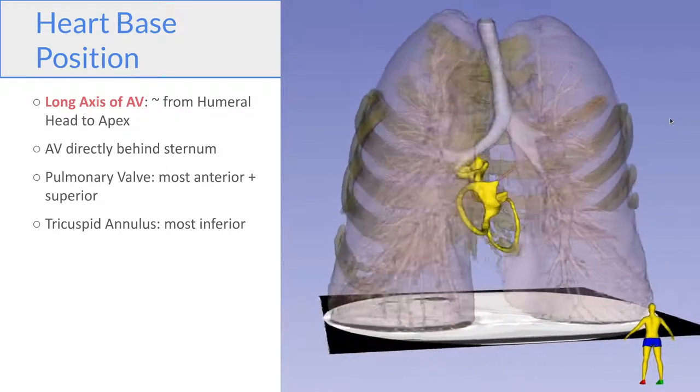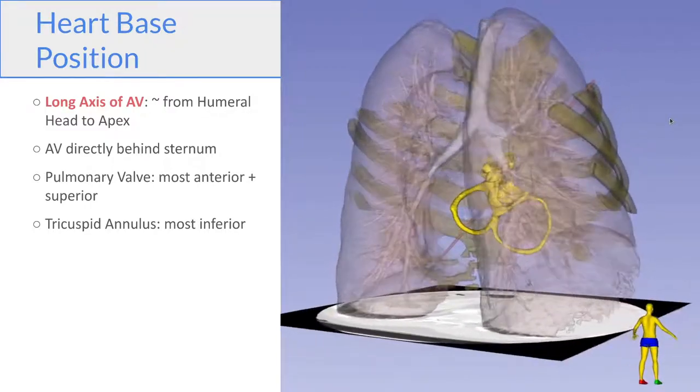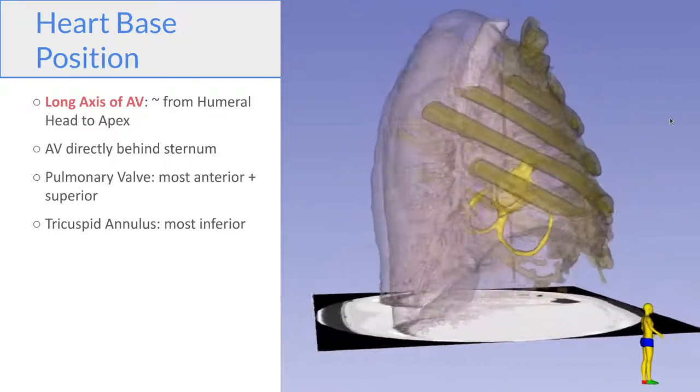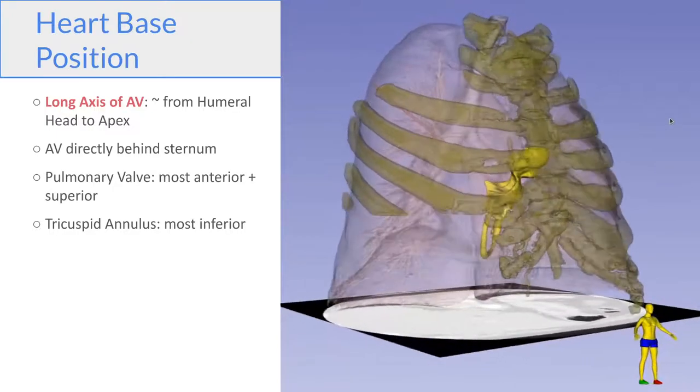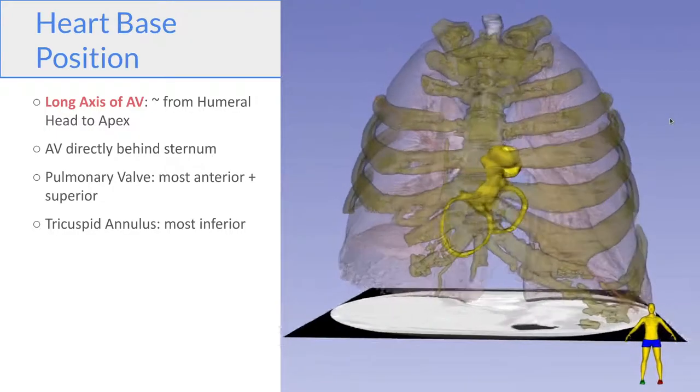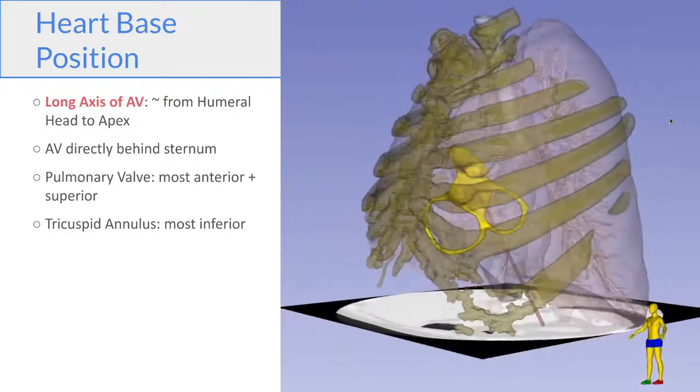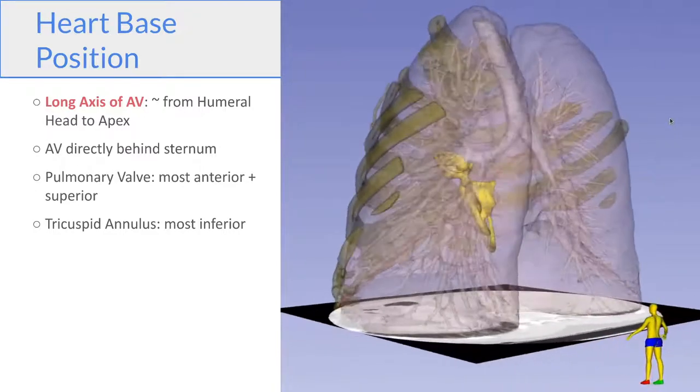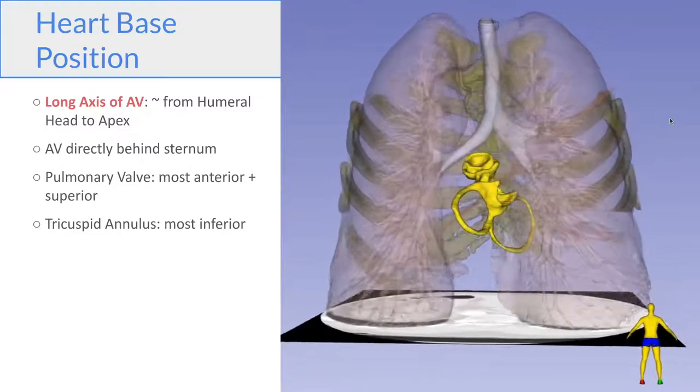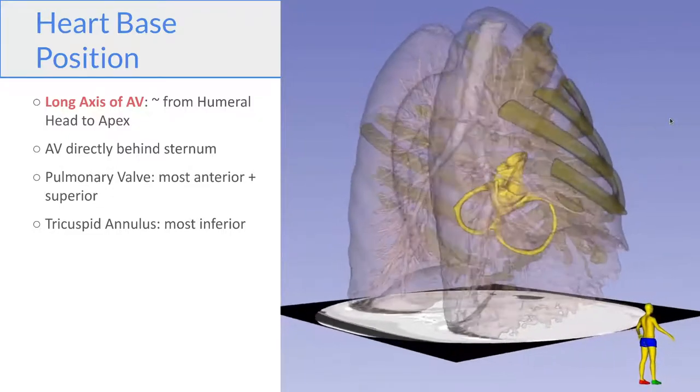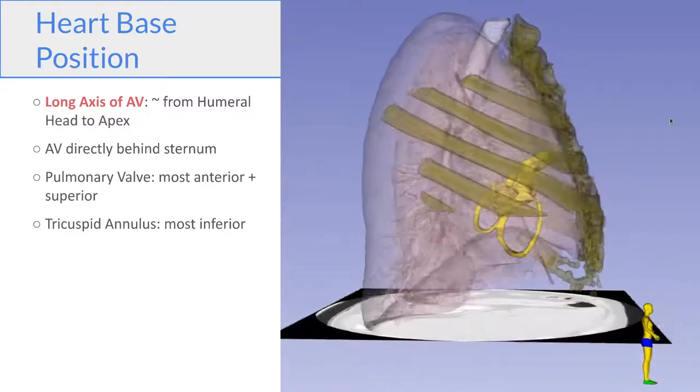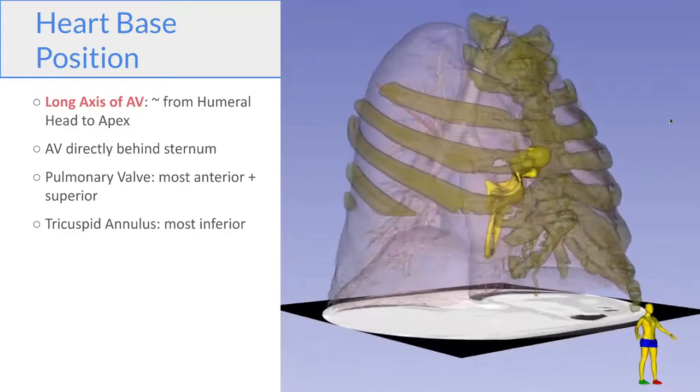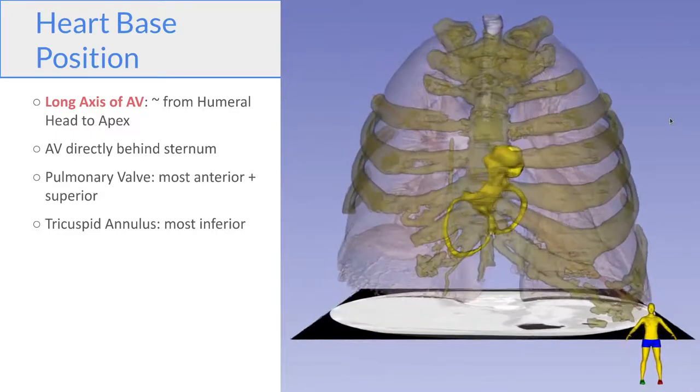The aortic valve itself is almost directly behind the sternum. And the planes of the mitral and tricuspid valves are essentially vertical. So knowing those key features will allow you to orient the heart base in the chest. So you should be able to look at a patient and visualize the heart base inside their chest, and should be able to visualize your own heart base.